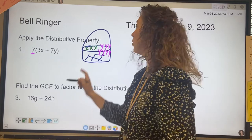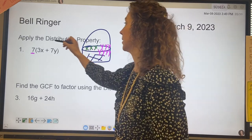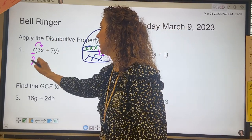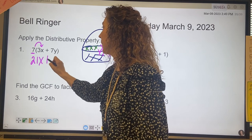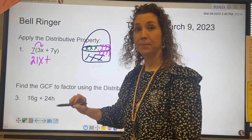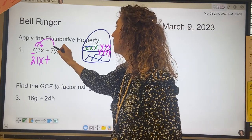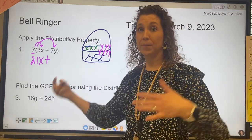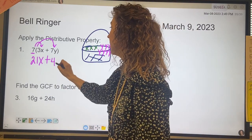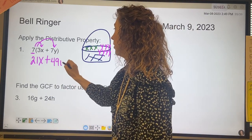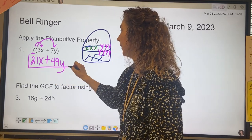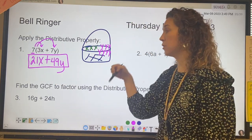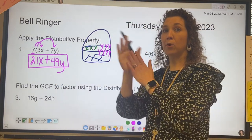So we have 7 groups of 3x. 7 groups of 3x would be 21x, plus we have 7 groups of 7y's — 7 groups of 7 — which is going to be 49y. That is applying the distributive property.